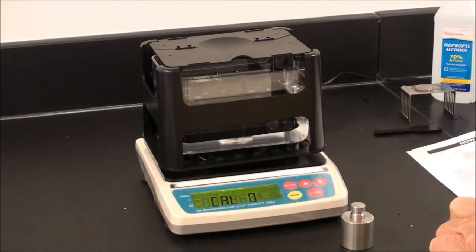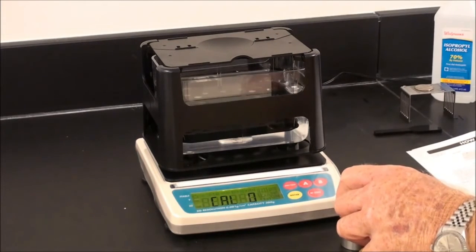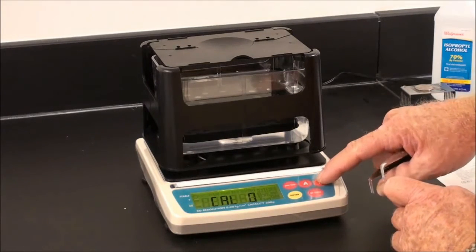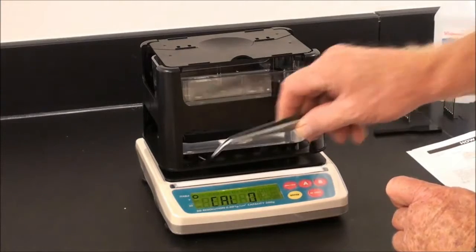Now you see CAL 0. Press the B key, the stability mark will appear.